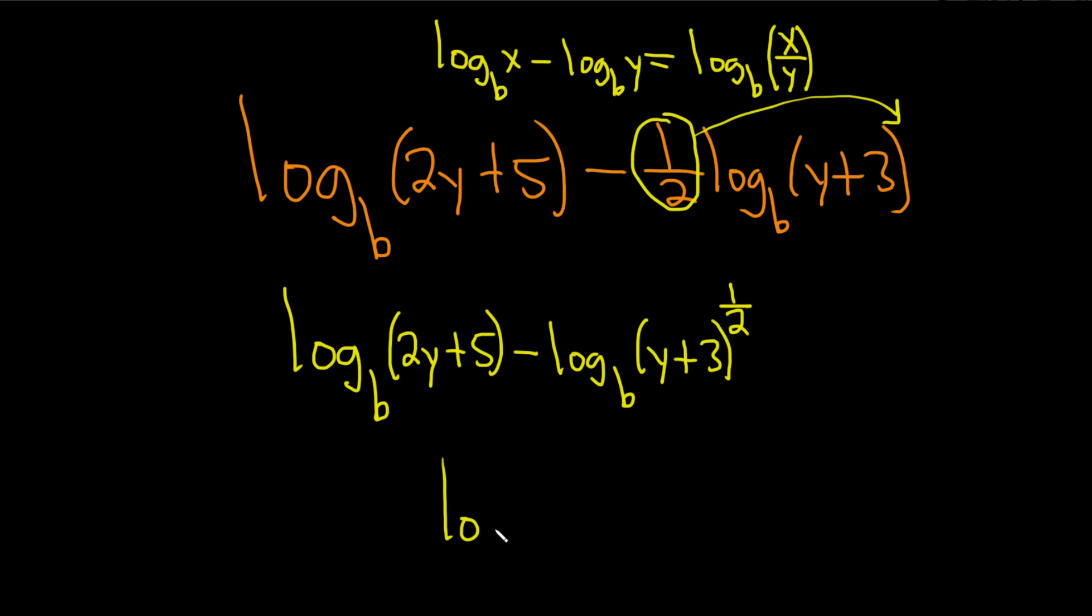So it'll be one log now. So log base b of, and then it's just 2y plus 5, right? That's the top piece. And the bottom piece will be y plus 3 to the one-half.